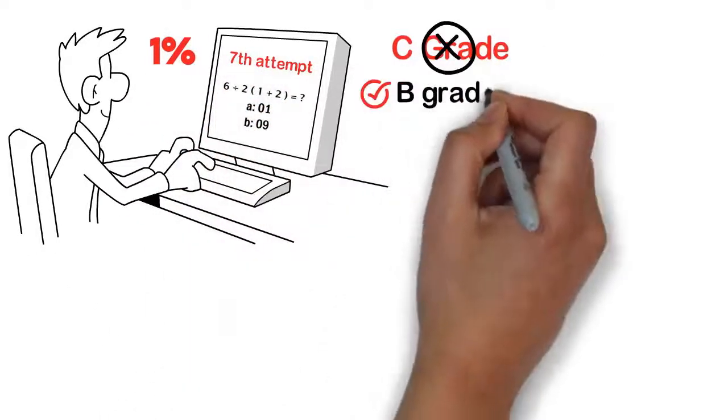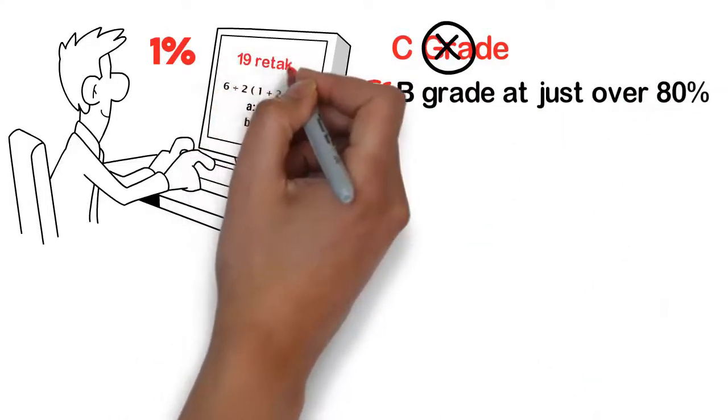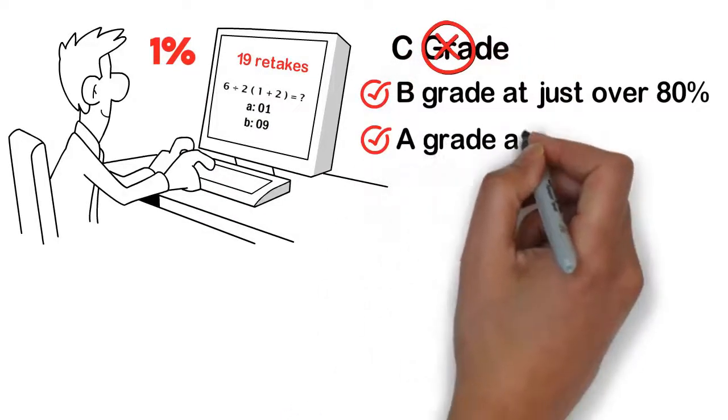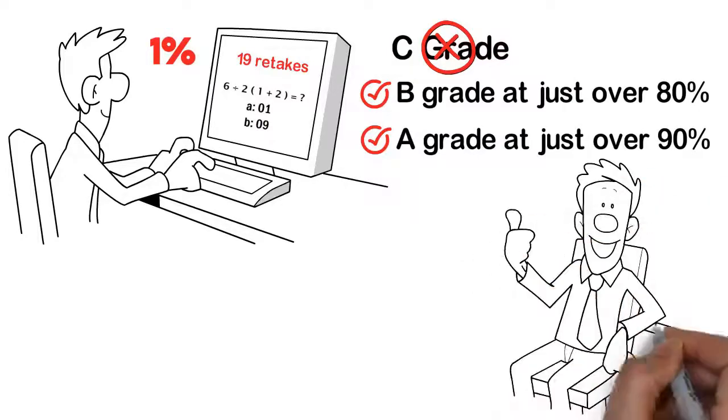And after 19 retakes, we'd transform a C grade into an A grade at just over 90%. Now, consider how life-changing this is for your math career, all from a simple 1% improvement each time.